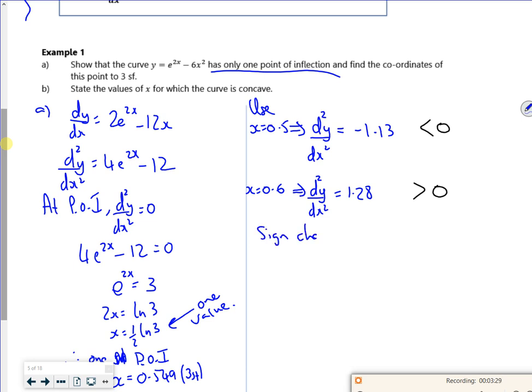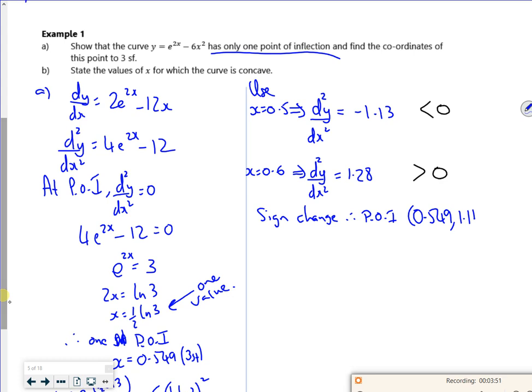Therefore, a point of inflection is at, what was it then? So it was 0.549, wasn't it? And 1.19. So I've got my, that's that bit done. I've found the point of inflection and I've checked it. So part B.